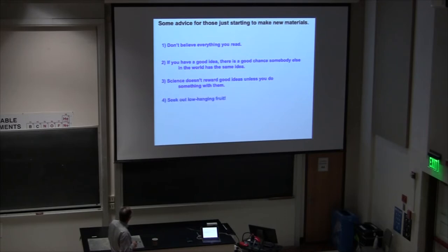Number four, seek out low-hanging fruit. There's a lot of low-hanging fruit out there, especially for new materials people. That's one of the advantages of people who grow the bulk materials. We can move very fast. We don't have as much control. Some of the thin film work that Jack was doing, the quality of the materials is just amazing. A lot of the bulk materials aren't as good quality, but it's generally easier to grow bulk materials. Thin films require a lot of work to get all the parameters right.